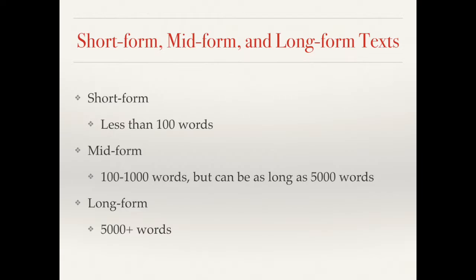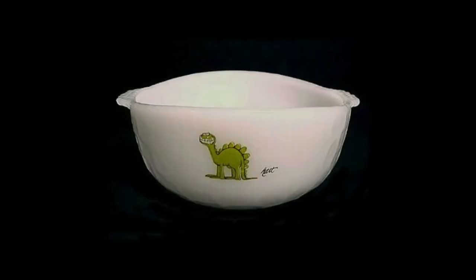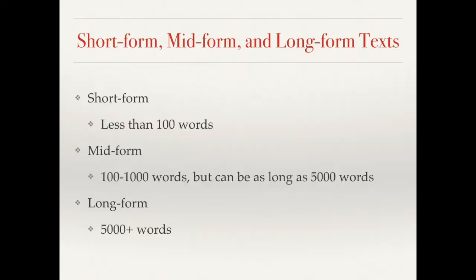An idea I found most interesting was the distinction between short form, mid form, and long form text. Short form texts are less than 100 words — social media posts, text messages, memes, headlines, etc. Mid form texts are 100 to 1,000 words, but can be up to 5,000 words — these include short stories, fan fiction, blog posts, or online journalism from reputable sources. Long form texts exceed 5,000 words — long form journalism, academic articles, books, and novels.